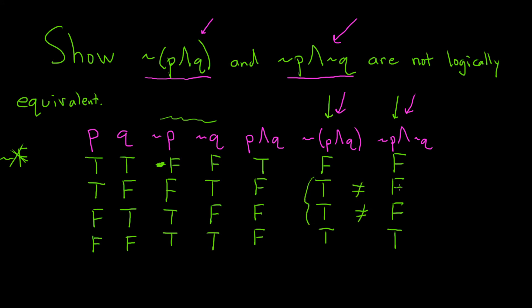There's some issue here, right? These are different truth values. We're good here in the first row and good in the last row, but that doesn't work. So they're not logically equivalent because of this.